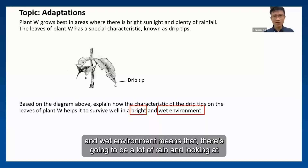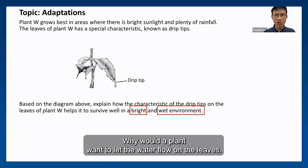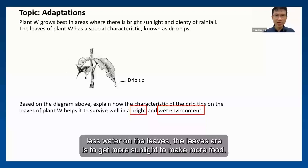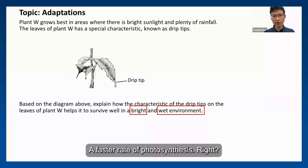A wet environment means that there's going to be a lot of rain. And looking at the picture, I know the drip tip allows the water to flow off the leaves. Why would the plants want to let the water flow off the leaf? Because if there's less water on the leaf, the leaf is going to be able to get more sunlight to make more food — at a faster rate of photosynthesis.